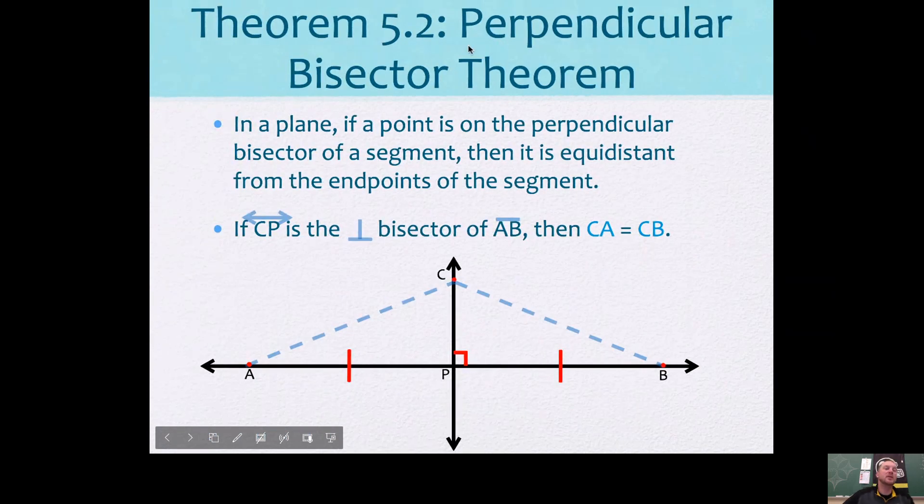So there is a perpendicular bisector theorem. This is theorem 5.2 in your theorem packet. In a plane, if a point is on the perpendicular bisector of a segment, then it is equidistant from the endpoints of that segment, and that's what we just said here.